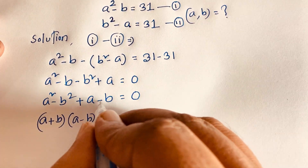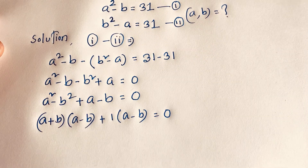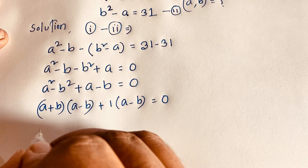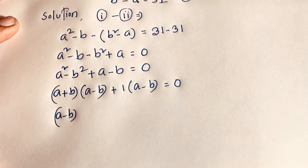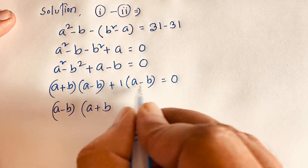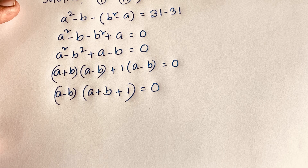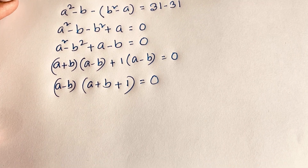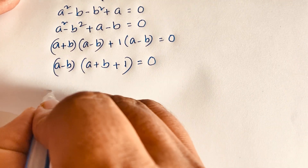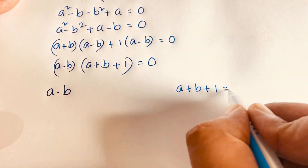Here A minus V is common, so we factor it out: A minus V times the quantity A plus V plus 1 is equal to 0. This gives us two cases. Case 1: A minus V is equal to 0. Case 2: A plus V plus 1 is equal to 0.